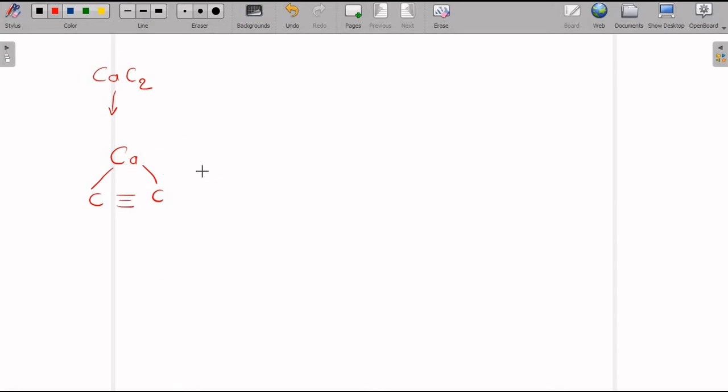Now when this calcium carbide reacts with two molecules of water, it is going to form acetylene, that is H-C triple bond C-H, plus Ca(OH)2. So, how is this reaction? Look at this.